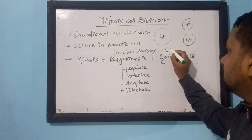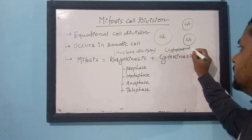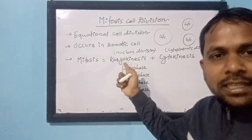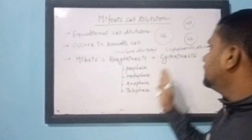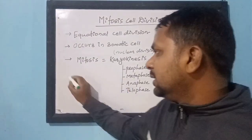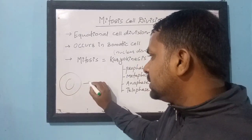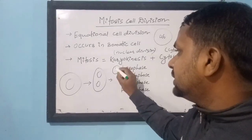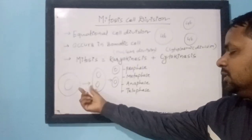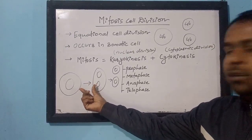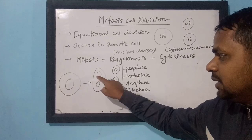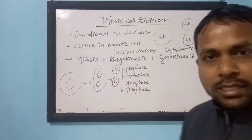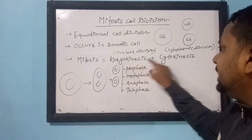When mitosis cell division takes place, first karyokinesis takes place — the nucleus is divided first. Suppose this is a cell with a nucleus; first nuclear division takes place and the nuclear material gets divided. Then after that, cytokinesis takes place and the cytoplasmic material gets divided, and the single cell changes into two cells.